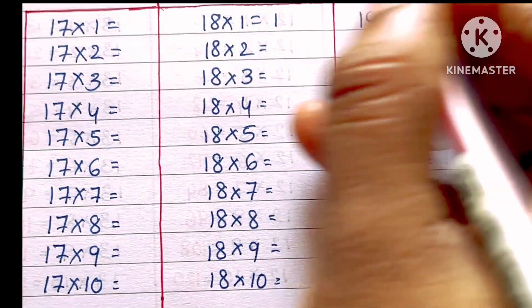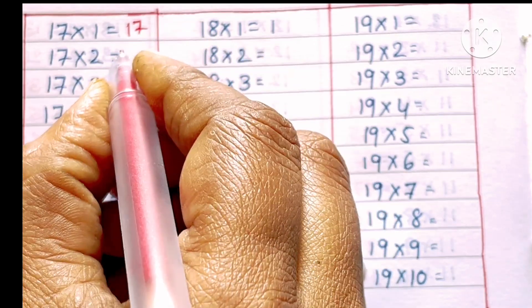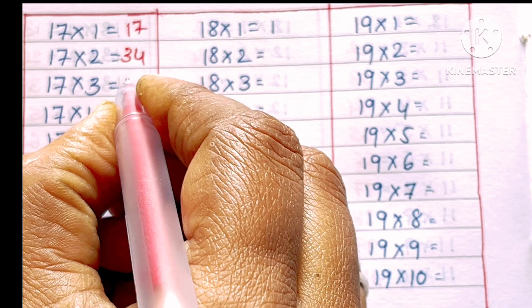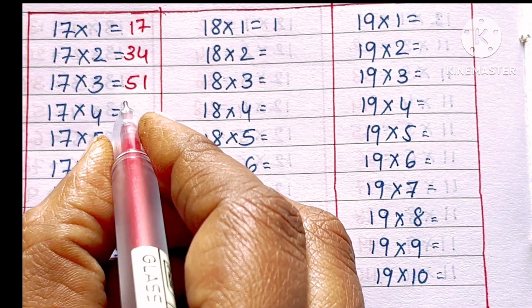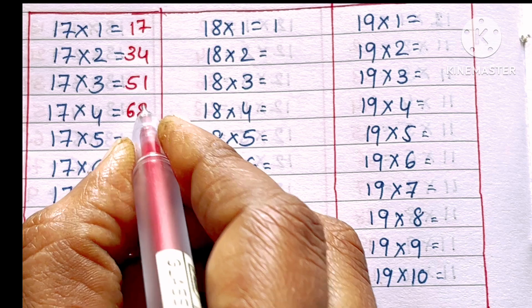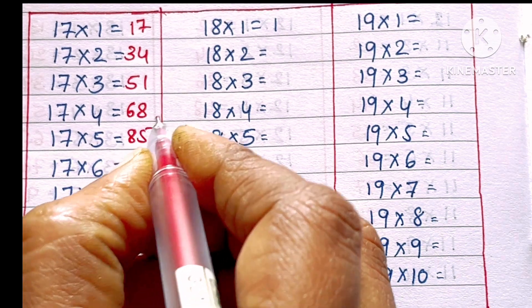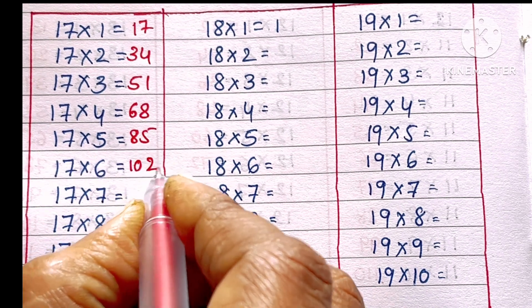17 ones are 17, 17 twos are 34, 17 threes are 51, 17 fours are 68, 17 fives are 85, 17 sixes are 102.